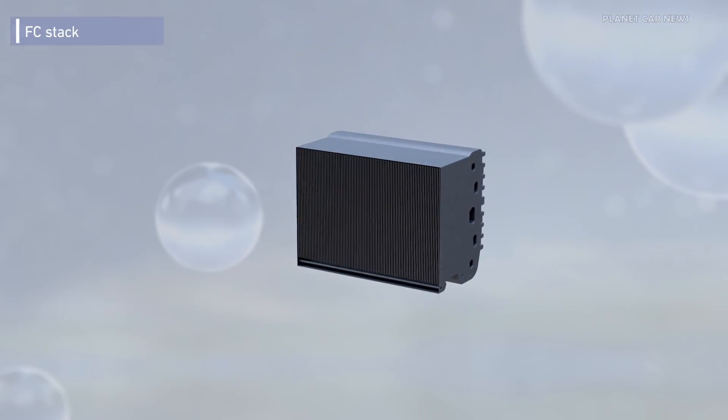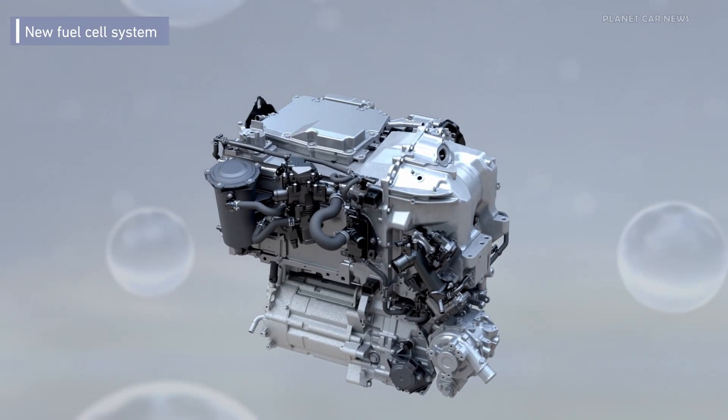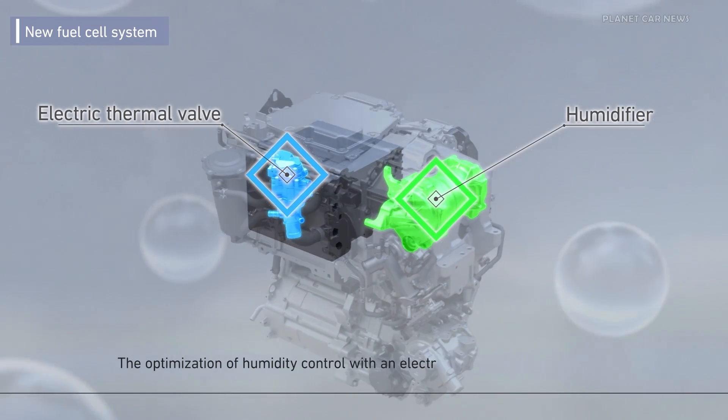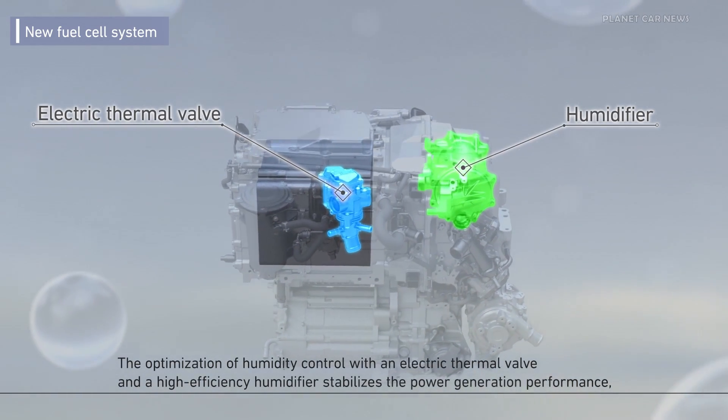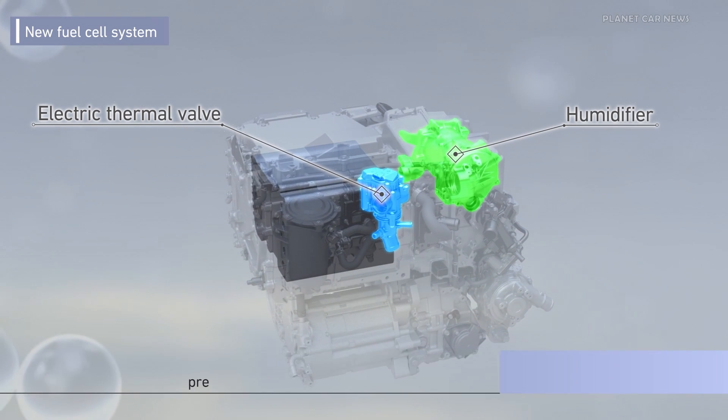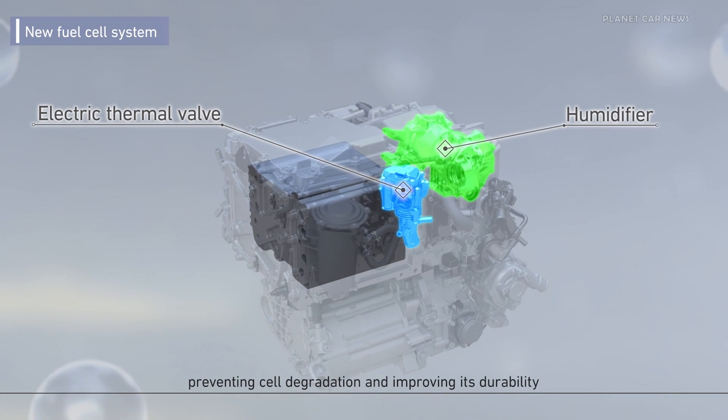But power generation efficiency drops in the area around the cell if the humidity is too high or too low. The optimization of humidity control with an electric thermal valve and a high efficiency humidifier improves the stability of power generation performance. This also prevents cell degradation and improves durability.